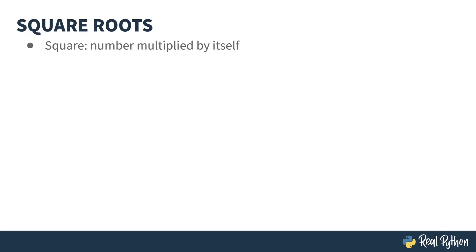A square is a number that is multiplied by itself. There are many ways of expressing this in math and programming. The big cross indicates multiplication; in most programming languages, the star is used for the same thing. In algebra, the superscript of 2 means to square the value. Some programming languages use the caret symbol — shift 6 on a US keyboard — to denote exponents. An exponent, or power of 2, is the same as squaring.